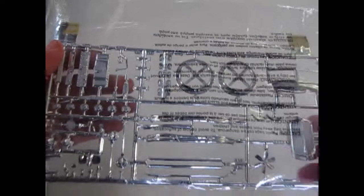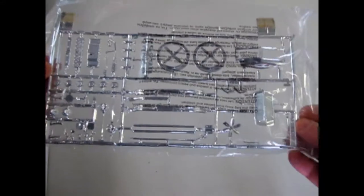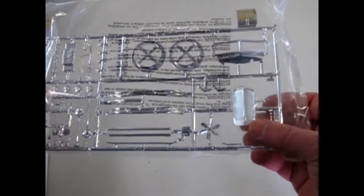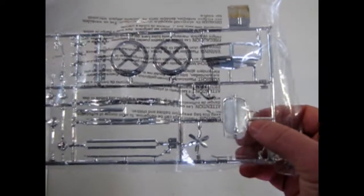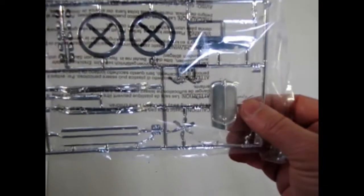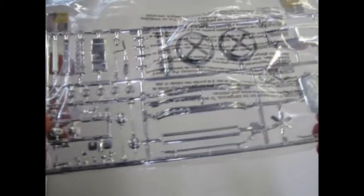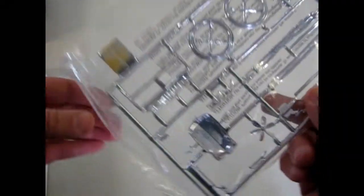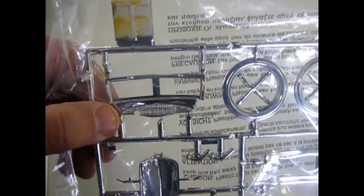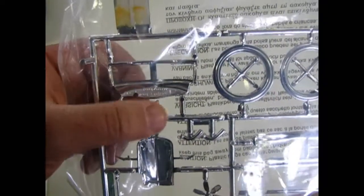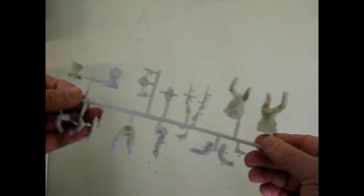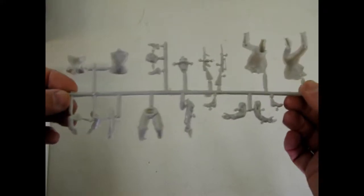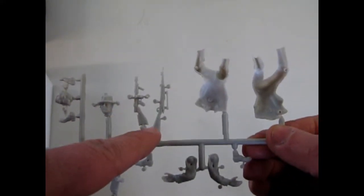Then we get our chrome pieces here. Unfortunately the writing is through this side of the plastic. But there's our radiator and it's got the little arms that come out to hold the headlights in place. And you get quite a lot of headlights and spotlights. There's our front windshield with the dashboard attached to it, nice and chromed. Here's the gangster figures.